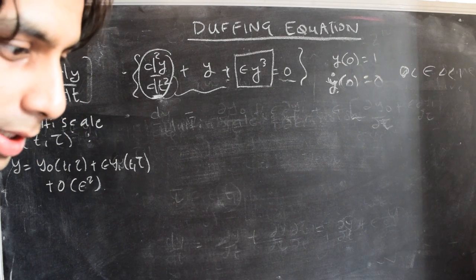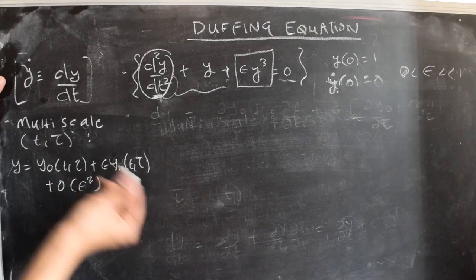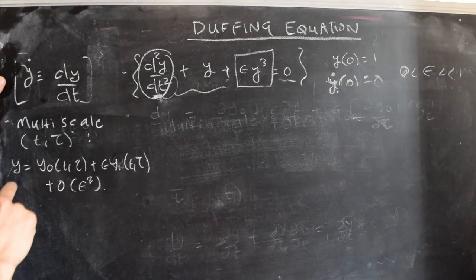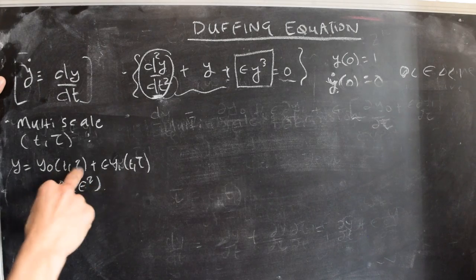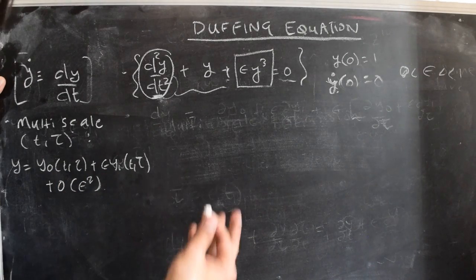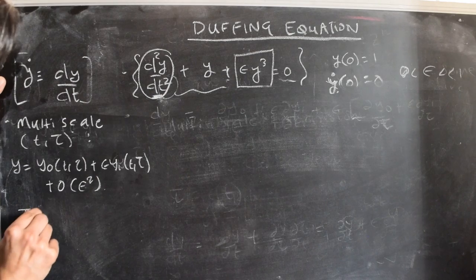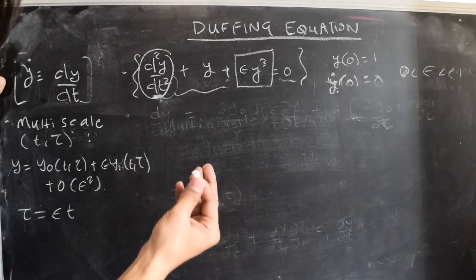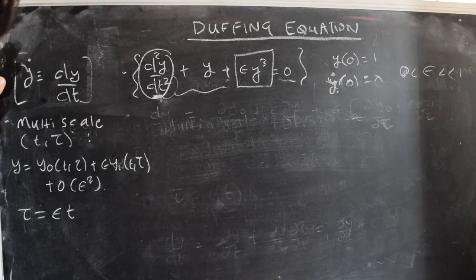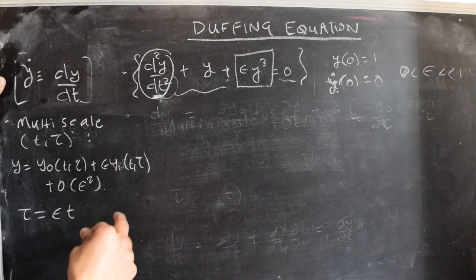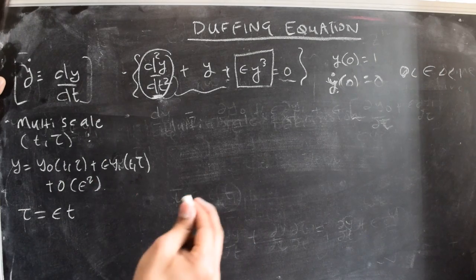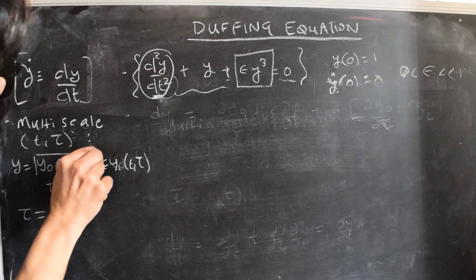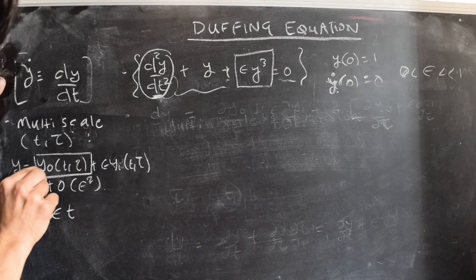If we have to calculate just the leading order term in the expansion, we look for an expansion of the form y = y0(t, τ) + ε·y1(t, τ), where τ = ε·t. We formally write the expansion as if y were a function of two variables t and τ. This two-timescale expansion will consistently give us the leading order solution y0 for this problem.